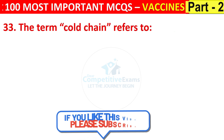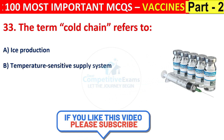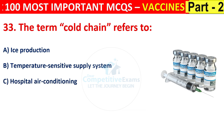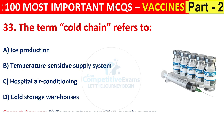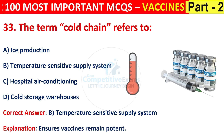Question number 33. The term cold chain refers to: ice production, temperature sensitive supply system, hospital air conditioning, or cold storage warehouses? The answer is B, that is temperature sensitive supply system, to ensure vaccines remain potent.